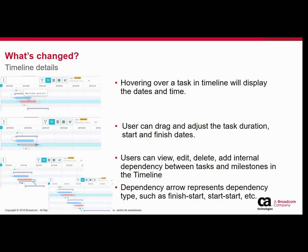The dependency type is determined by how you link the two tasks. For example, if you link the end of the first task to the start of the second task, it will create a finish-to-start dependency. Similarly, if you create a dependency from the start of one task to the start of another, it creates a start-to-start dependency.